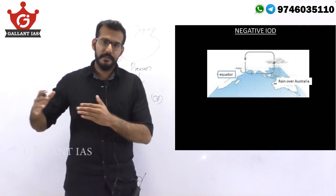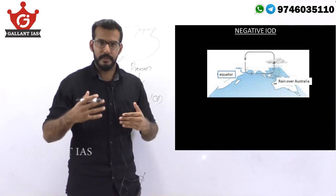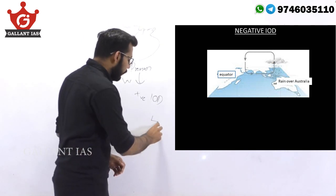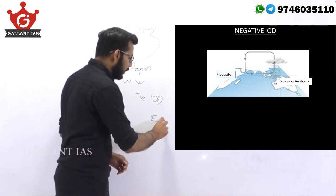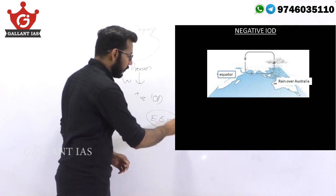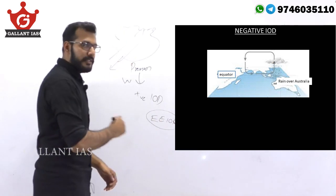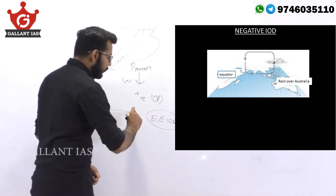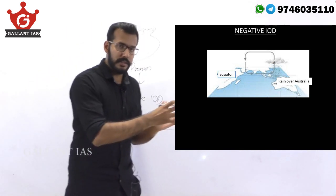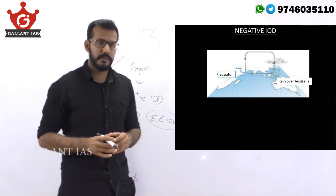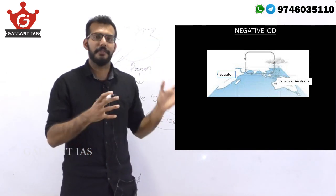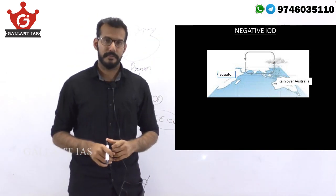During a negative IOD phase, conversely, there is a warming up of the eastern equatorial Indian Ocean region, which means wind is drawn from other areas towards the eastern equatorial Indian Ocean region, leading to the formation of clouds there and rain in Australia.